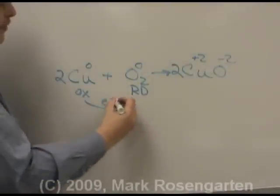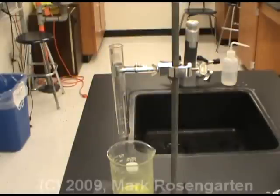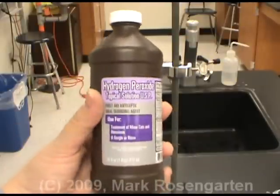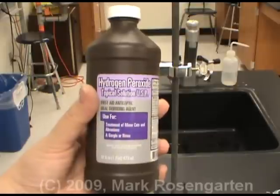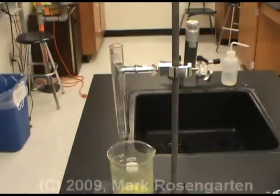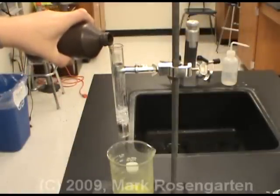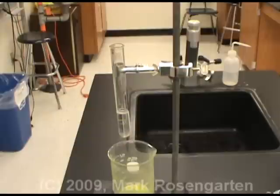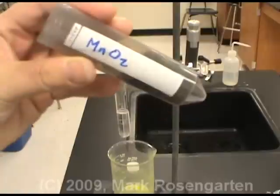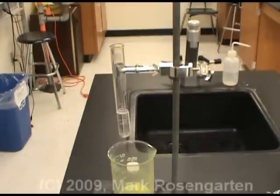The copper gave up its valence electrons to the oxygen. In this next reaction, we are going to decompose hydrogen peroxide. Peroxides are very unstable compounds and decompose very quickly when a catalyst is added. The catalyst we will use for the decomposition of hydrogen peroxide is manganese dioxide. When hydrogen peroxide decomposes, it forms water plus oxygen gas.